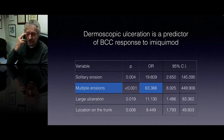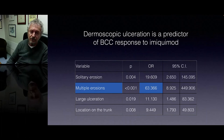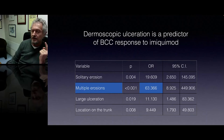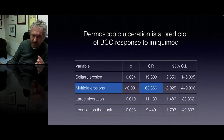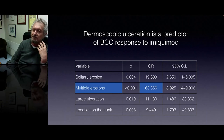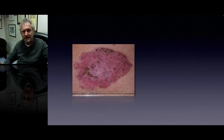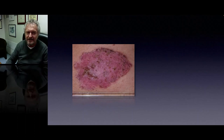Finally, concerning dermoscopy, I wanted to mention this kind of application — a discovery we made a few years ago. We identified that there is one most important criterion predicting the response of a BCC treated with topical imiquimod, and this is the presence of multiple erosions. If we have ulceration and multiple erosions, then there is a higher chance that this lesion could be treated efficiently with imiquimod. Here you can see a superficial BCC with multiple erosions, and clearly this lesion is responding well with the use of imiquimod.